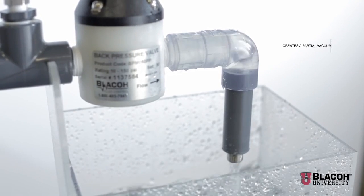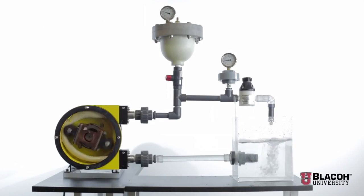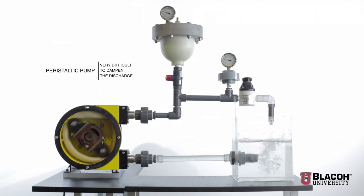This creates a partial vacuum as some product is actually sucked back to the discharge momentarily. This action, along with the normal pulsing action created by its positive displacement nature, makes the peristaltic pump very difficult to dampen the discharge flow.